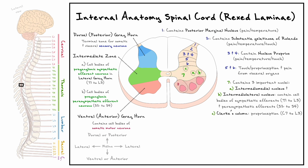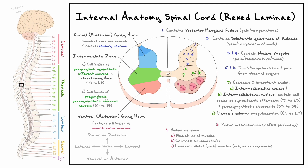Laminae 8 and 9 are part of the ventral gray horn and process motor information. Lamina 8 contains motor interneurons that mediate reflex pathways, while lamina 9 contains somatic motor neurons that activate striated muscles. There are three general nuclei in lamina 9: the most medial one activates axial muscles, the central one activates proximal limb muscles, and the most lateral one activates distal muscles — the latter only present at the cervical and lumbosacral enlargements. The ventral regions of these nuclei activate extensor muscles and the dorsal regions activate flexor muscles.